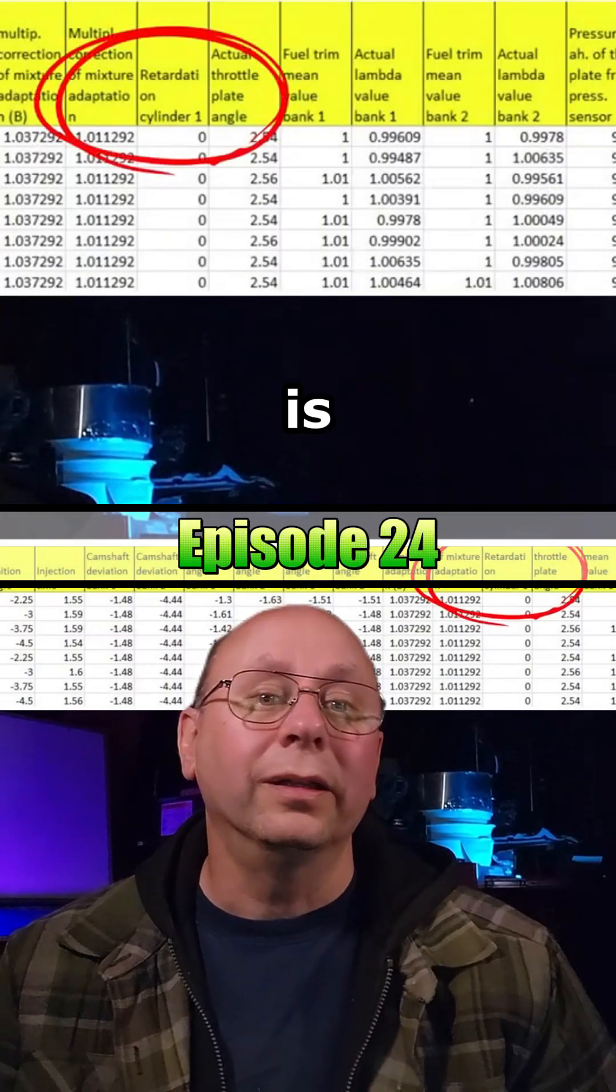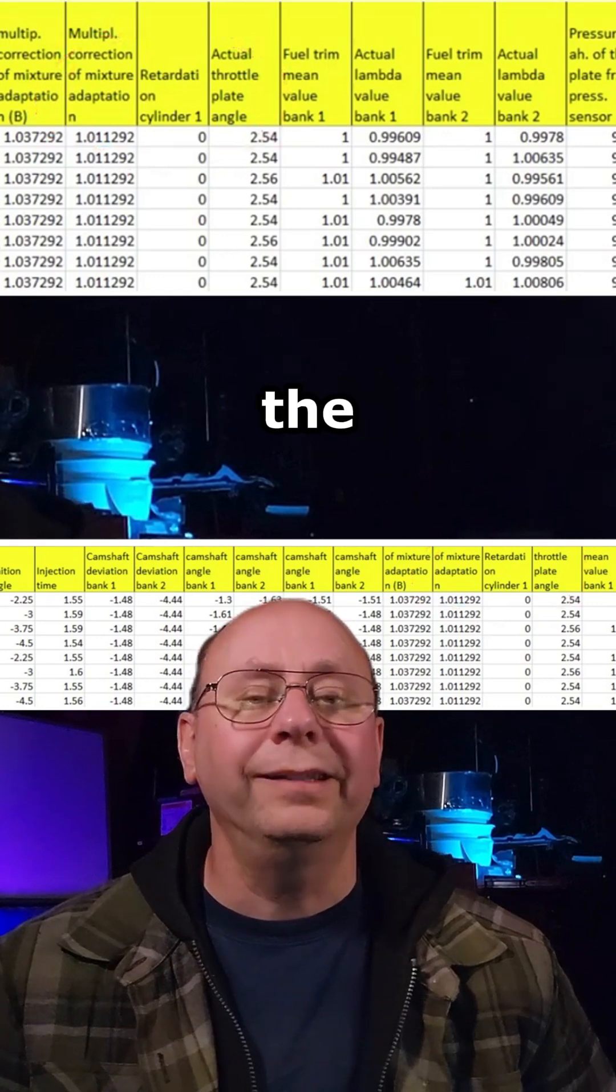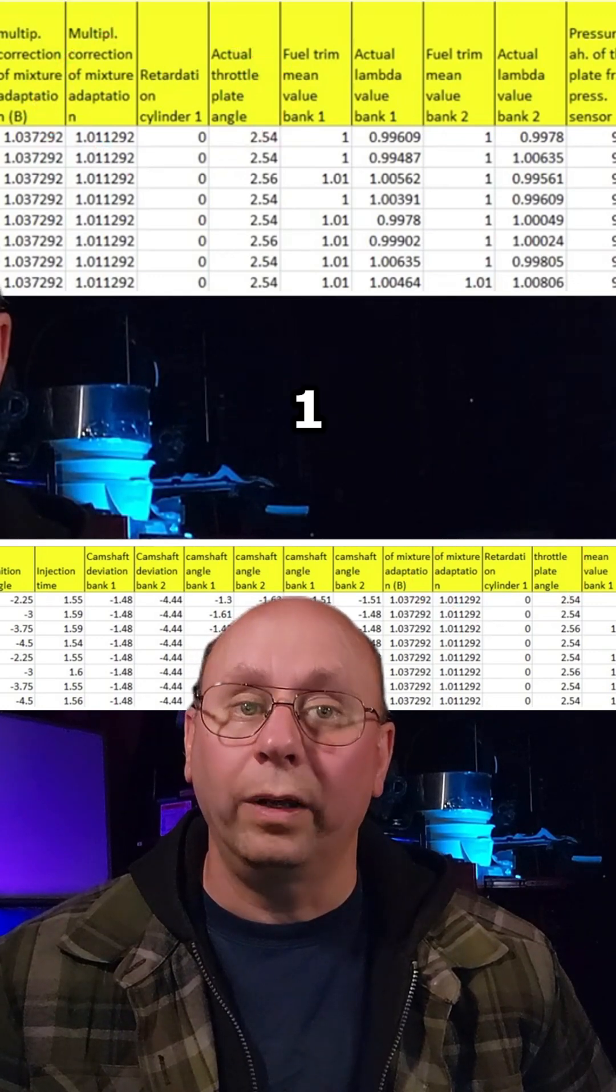Retardation Cylinder 1 is the next column over and is referring to the NOC adaption value that the ECU is applying to Cylinder 1.